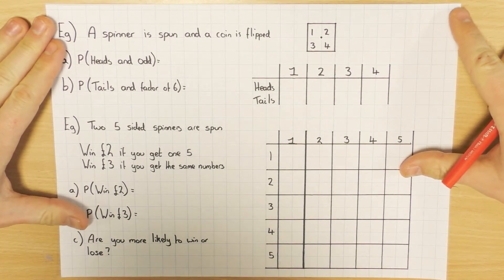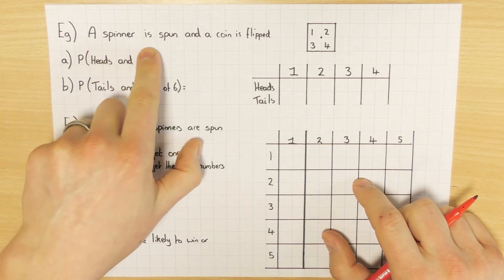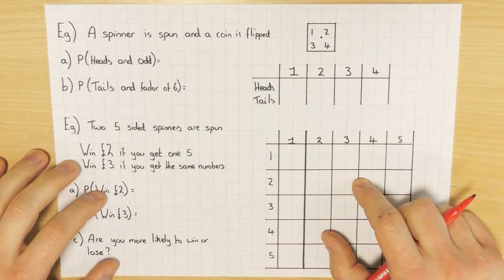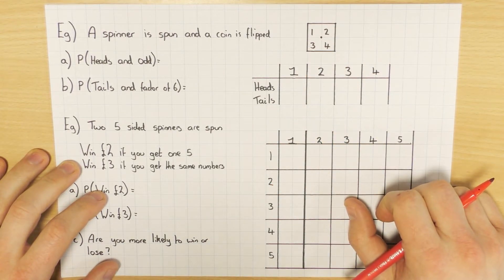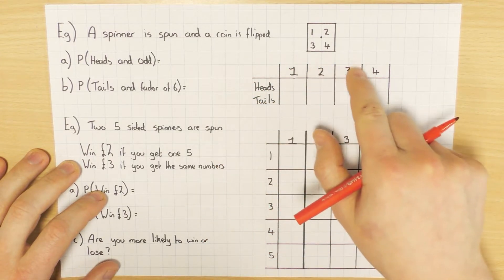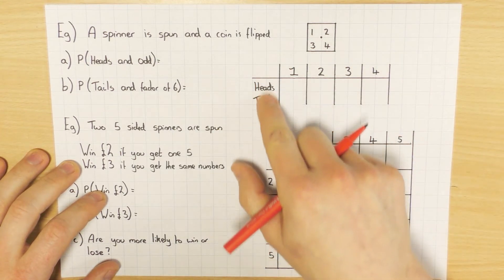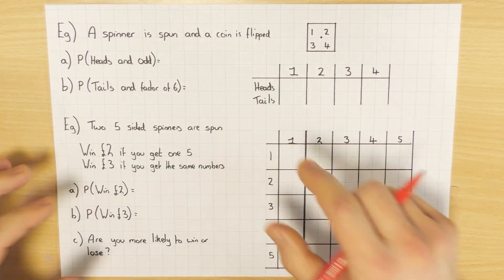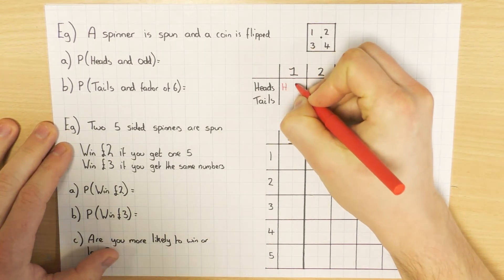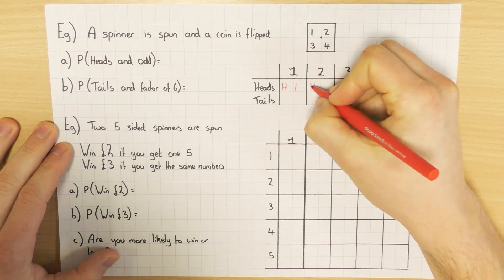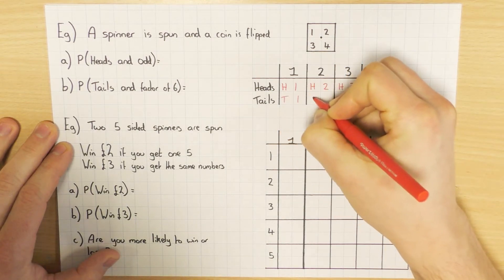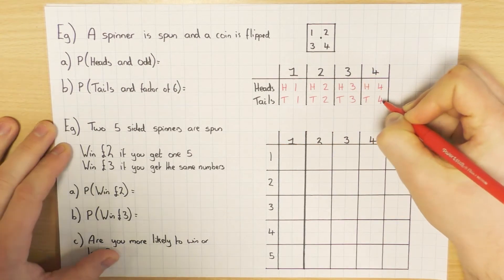In this example, a spinner is spun and a coin is flipped. The spinner has options one, two, three, four and a coin has heads and tails. The sample space has the spinner options (1, 2, 3, 4) along one axis and the coin (heads and tails) down the other. The outcomes are simply H1, H2, H3, H4 for heads, and T1, T2, T3, T4 for tails - since we're not adding or multiplying, just combining.